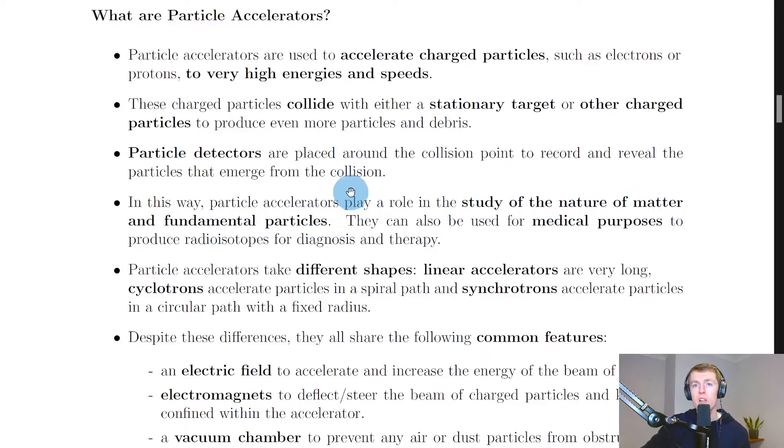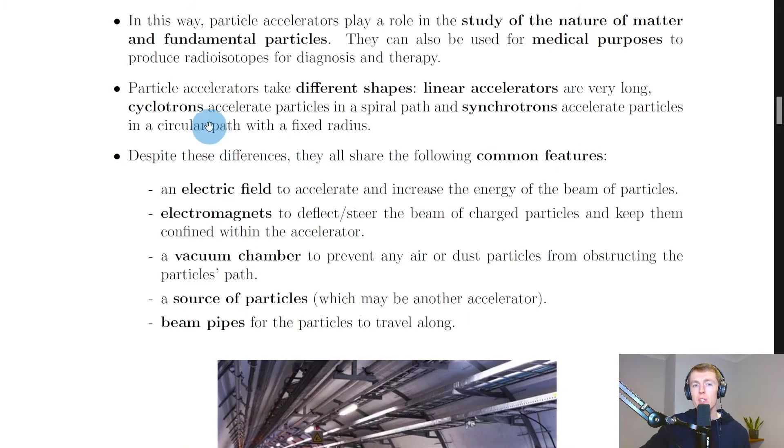Now you need to know that particle accelerators can take different shapes. So we have linear accelerators that are very long and straight, i.e. linear. We have cyclotrons which accelerate particles in a spiral path, and synchrotrons which accelerate particles in a circular path with a fixed radius.